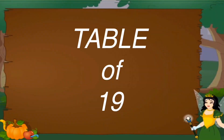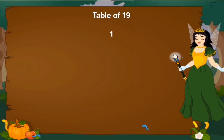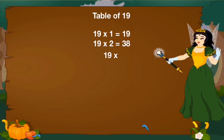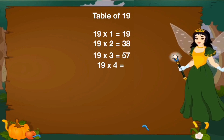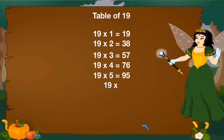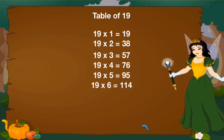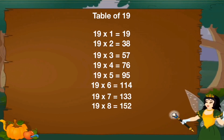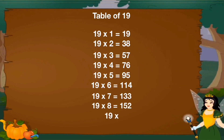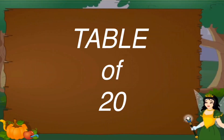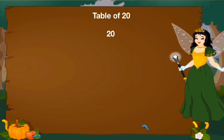Let's revise table of 19. 19 1's are 19, 19 2's are 38, 19 3's are 57, 19 4's are 76, 19 5's are 95, 19 6's are 114, 19 7's are 133, 19 8's are 152, 19 9's are 171, 19 10's are 190.